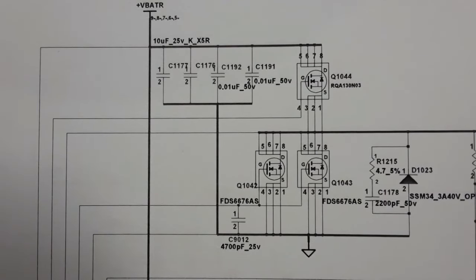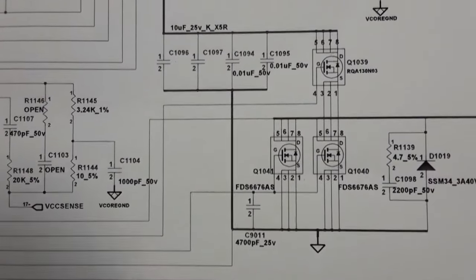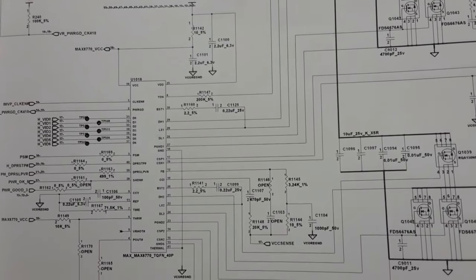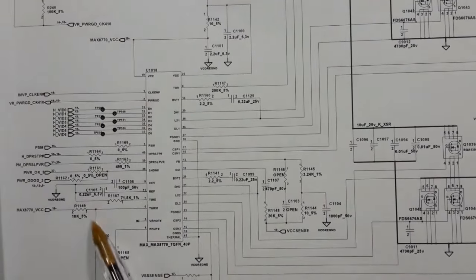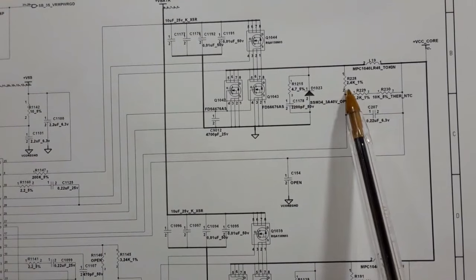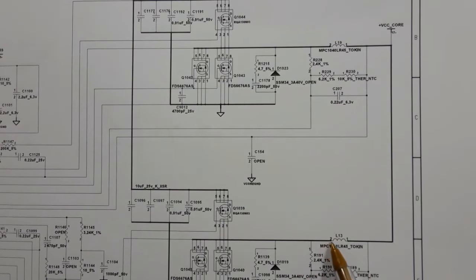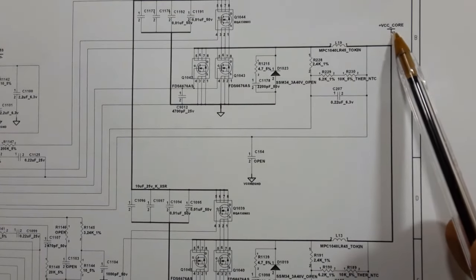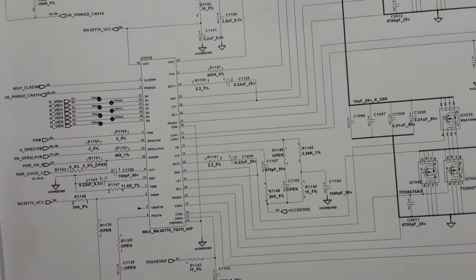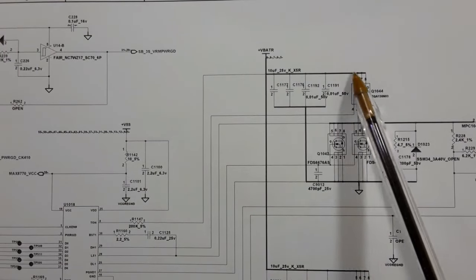The CPU power circuit has one channel or more. Here is the first channel and here is the second channel. The power management IC has two channels — the first channel produces VCC core and the second channel works to produce the same voltage, plus VCC core. The master channel and slave channel follow the same working principle: the power management IC, upper MOSFET, and lower MOSFET connected to the battery — 19 volt.